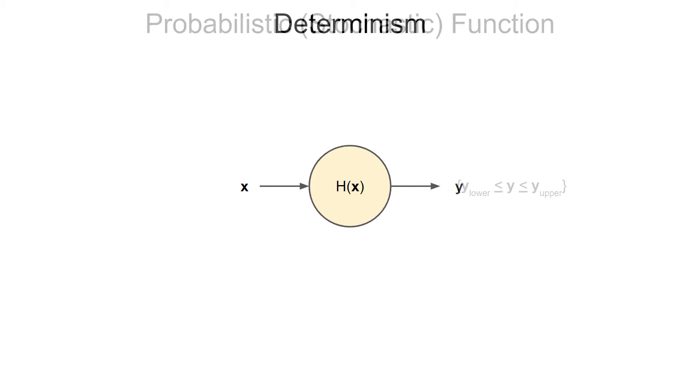On the other hand, if the function was not deterministic, it would be probabilistic. In this case, it would also be known as a stochastic function. Here, the output does not remain the same between executions of the function, even if we're using the same input. That's because a stochastic function has some level of randomness in it, and can therefore produce a random result. The output may be bounded, as I've shown in this example, but it doesn't necessarily have to be.